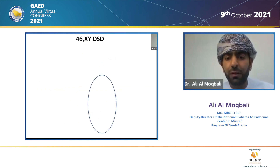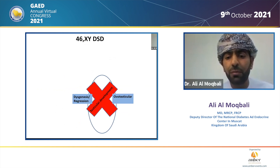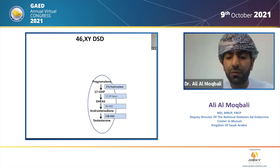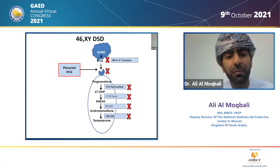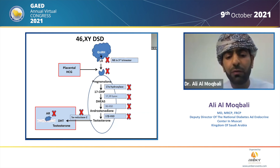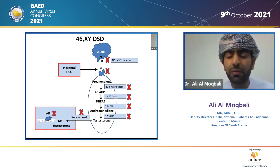A 46XY DSD can have a problem in the testes — testicular maldevelopment, dysgenesis, or regression. The problem can happen at the biosynthesis of testosterone where one of the enzymes is defective, at the LH receptor, or at the androgen receptor level. Testosterone conversion to DHT can also be defective. A defect at one of these sites might cause a 46XY DSD.